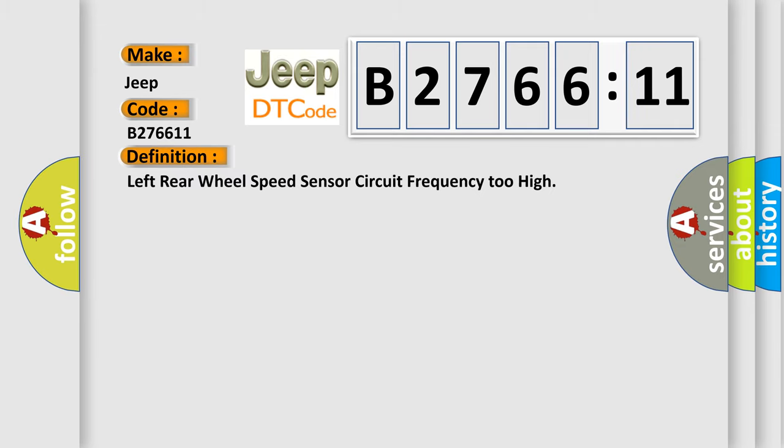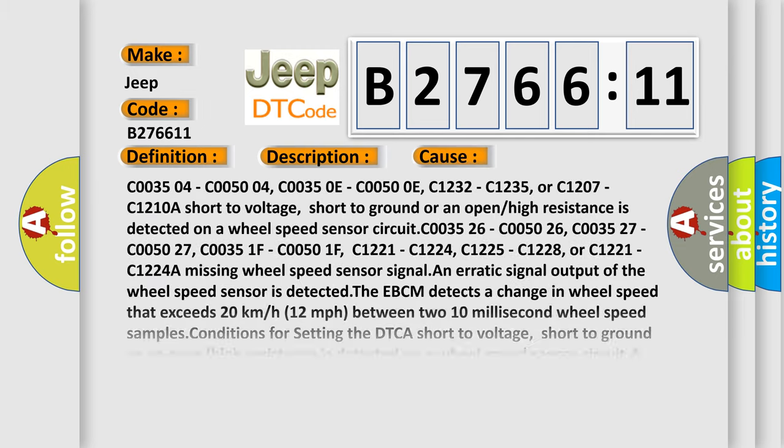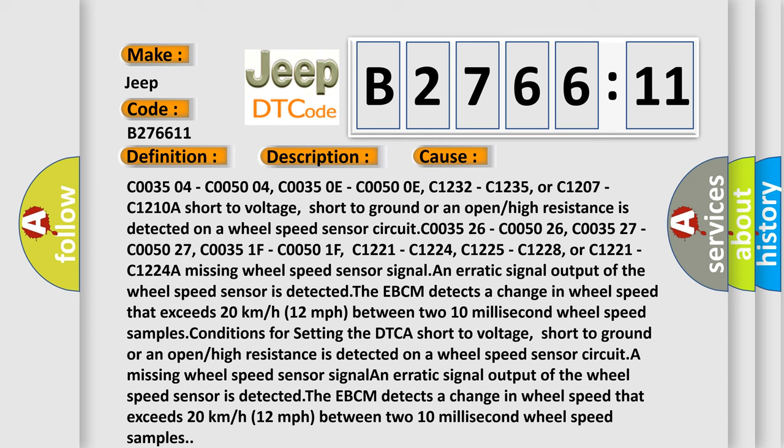The basic definition is left rear wheel speed sensor circuit frequency too high. And now this is a short description of this DTC code: Ignition on ignition voltage is greater than 10 volts, the brake pedal is not pressed, and two or three other wheel speeds are greater than zero kilometers per hour. This diagnostic error occurs most often in these cases.